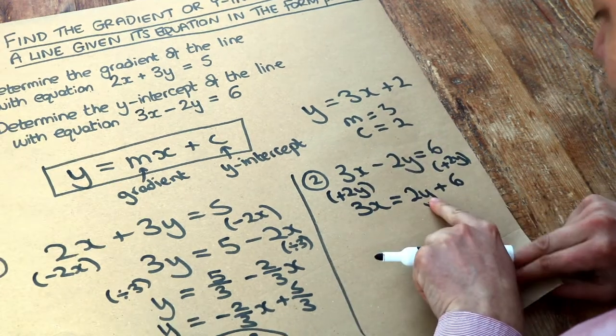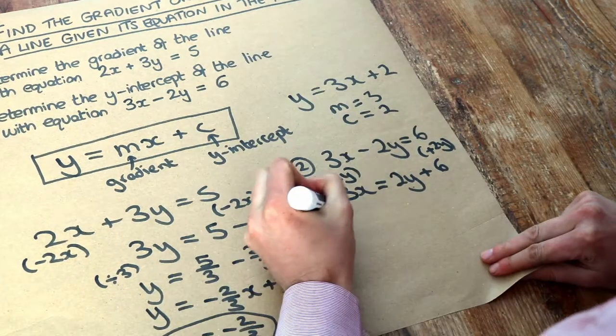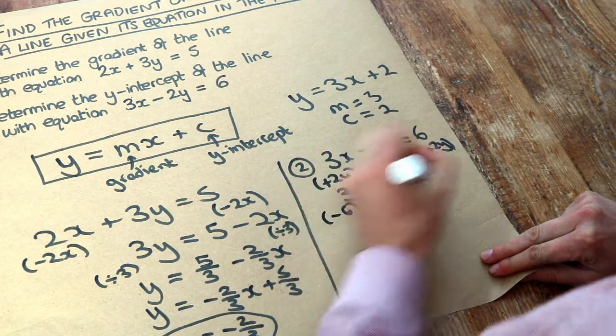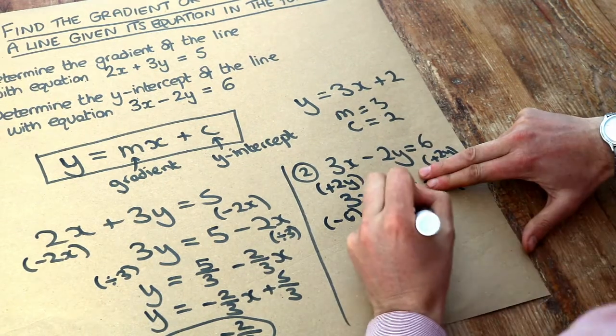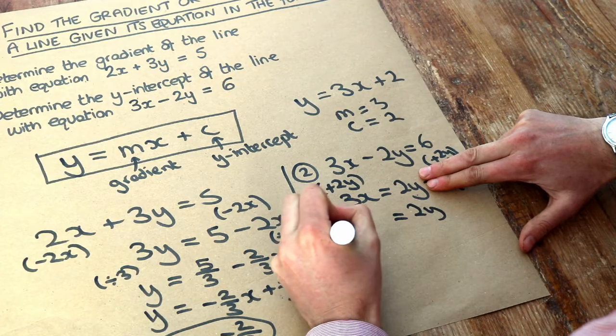Now we want to get the y on its own. It's been multiplied by 2, then we're adding 6. We undo the last thing, so we subtract 6 to get rid of the plus 6. That gets rid of the plus 6 over here, so we get 2y, and now we've got 3x minus 6 here.